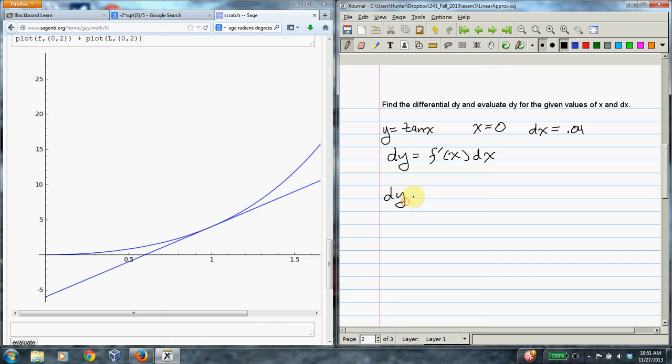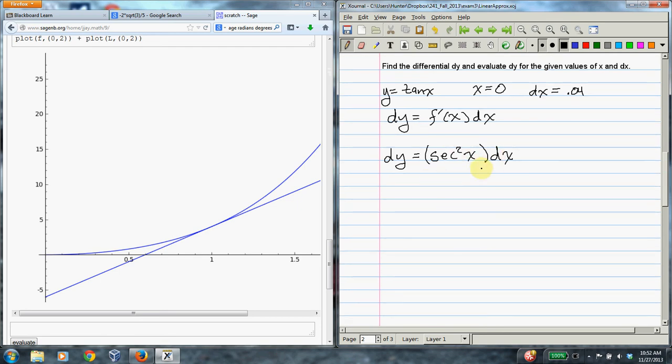So dy is going to be equal to the derivative of tangent is secant squared, sec^2(x) times dx. And now we're supposed to plug in these particular values, x equals 0 and dx equals 4 over 100. They don't say whether this is radians or degrees. And it actually does make a difference. And I'll talk about that in the next problem.